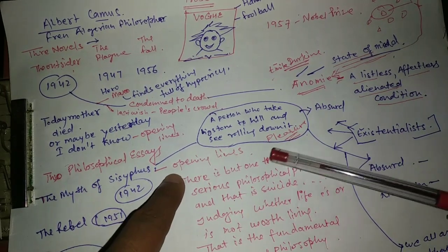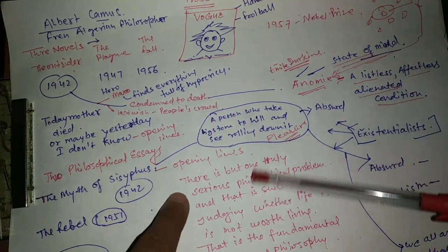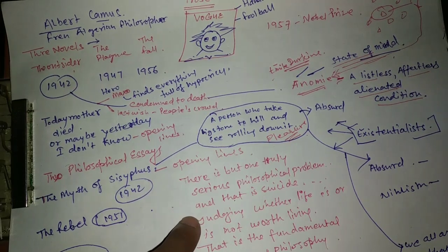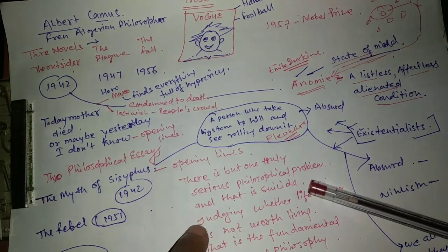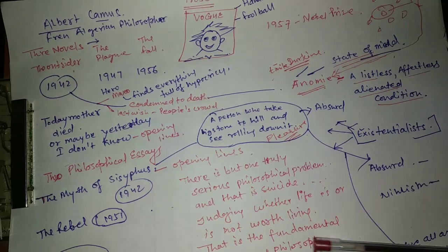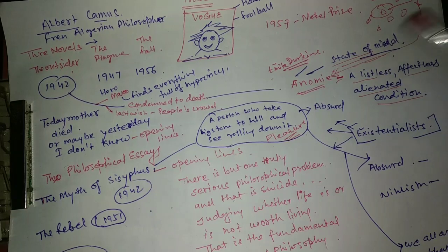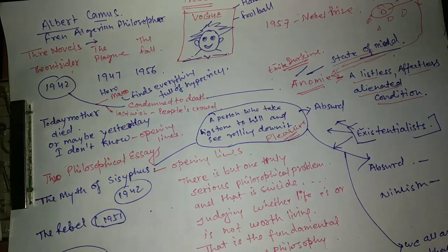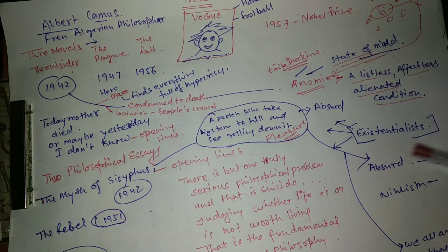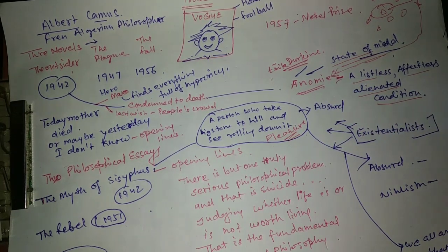The Myth of Sisyphus's opening line is a very thought-provoking line which says that there is but one truly serious philosophical problem and that is judging whether life is or is not worth living. That is the fundamental question of philosophy. The fundamental philosophy is that life should be or should not be. Many words about absurd, existentialist, absurd, nihilism. What are we going to talk about in philosophy?